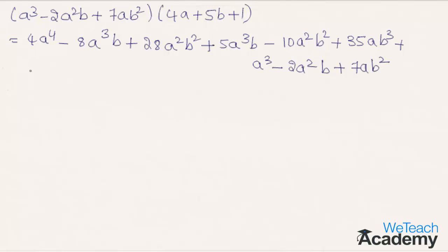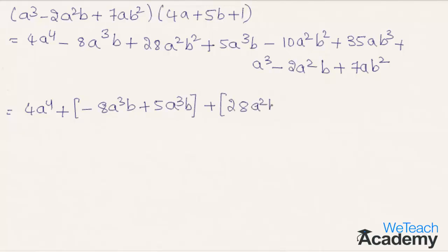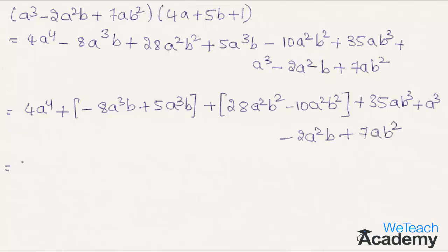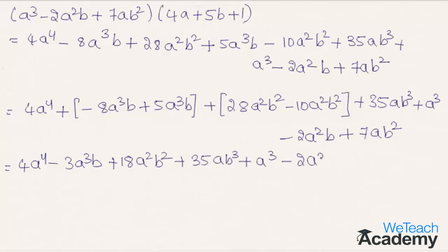Now by grouping the like terms we get: 4a to the power 4, plus (minus 8a cubed b plus 5a cubed b) which gives minus 3a cubed b, plus (28a squared b squared minus 10a squared b squared) giving 18a squared b squared, plus 35ab cubed, plus a cubed minus 2a squared b plus 7ab squared.